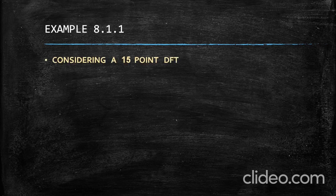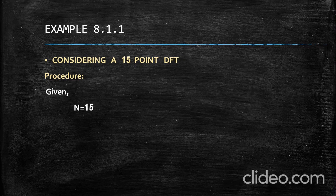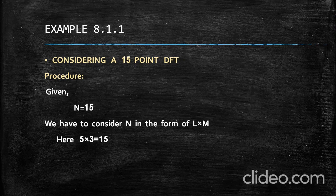Now let us see a basic example without specific values. We consider a 15-point DFT, meaning we find the DFT for a sequence containing 15 elements. Given N equals 15, in the divide and conquer approach we represent N in the form L times M. 15 can be represented as 5 times 3, so L equals 5 and M equals 3, giving 5 rows and 3 columns.